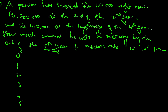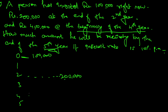The person has invested rupees one lakh right now, so that is at the end of the zero year — one lakh. Then two lakhs at the end of the second year. Then four lakhs at the beginning of the fourth year, which is the same as the end of the third year — four lakhs. So how much will he receive by the end of the fifth year?